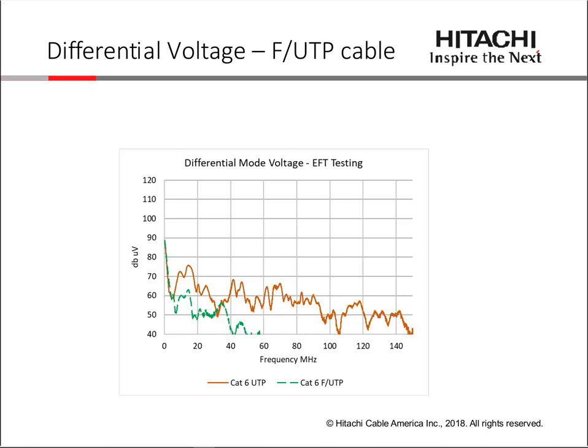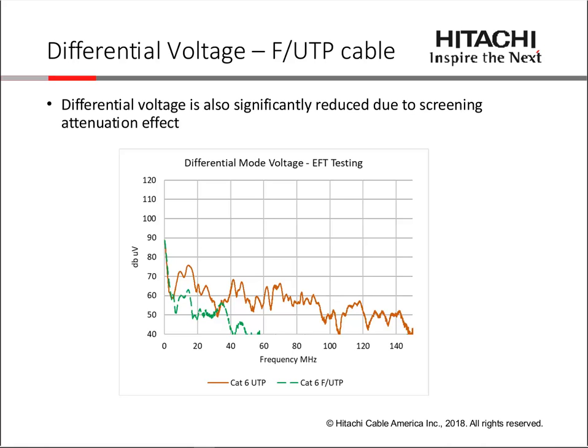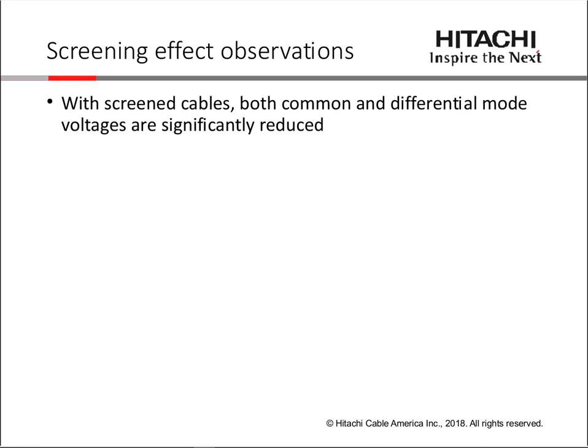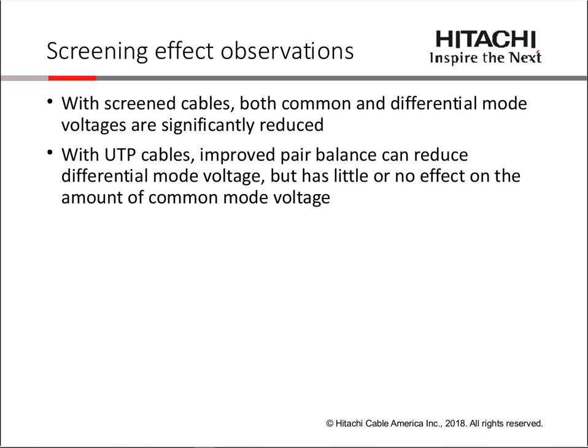We also measured differential-mode voltage on the screened cables for verification, and again saw significant reduction in differential-mode voltage, matching the reduction in common-mode and confirming the effectiveness of screened cable design for minimizing noise from outside sources. With UTP cables, improved pair balance can indeed reduce differential-mode voltage, but it has little or no effect on the amount of common-mode voltage induced. This has various implications: allowing high common-mode voltage on a cable inflicts that voltage on the connectivity and, most importantly, on the electronics at each end, requiring high common-mode rejection to operate properly.